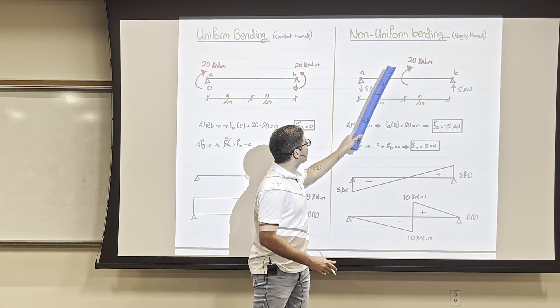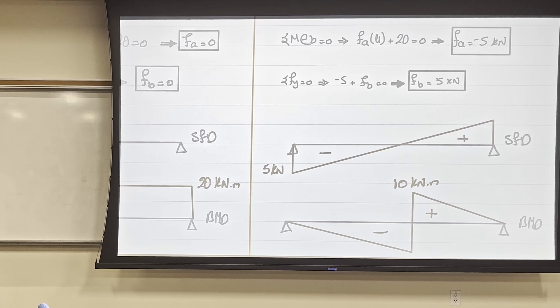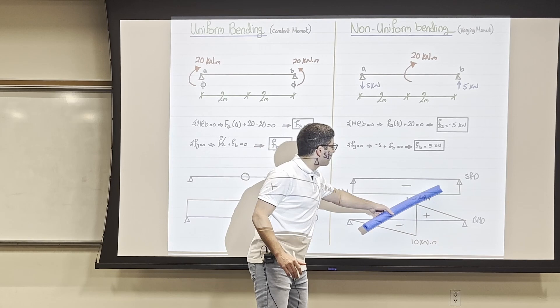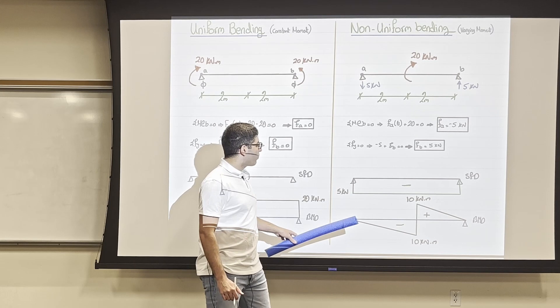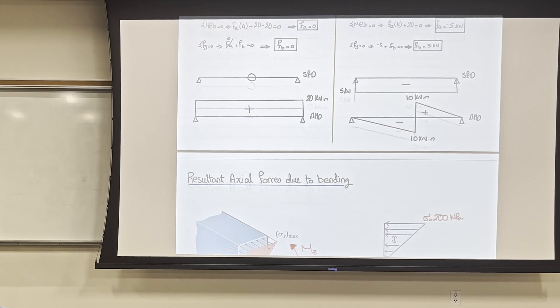When we have only one bending moment, we're going to have a reaction force to counter that moment, creating a shear diagram. When you have a shear force diagram, that's when you have a varying bending moment — which we call non-uniform bending. When you have a constant moment, we call it uniform bending. It's important to understand this because we'll need it later.